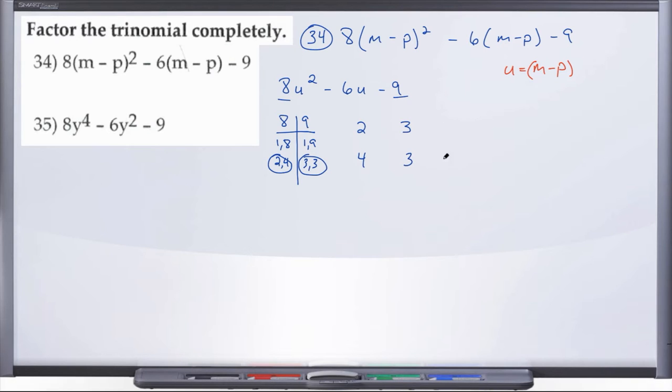And normally this is where we would flip this second set, but if we flip 3 and 3, we end up with 3 and 3 again. So there's really no sense in us flipping the 3 and 3. So we have 2 times 3, that's going to give us 6. 4 times 3, that gives us 12. Can we, in some combination, subtract 12 and 6 to get a negative 6?